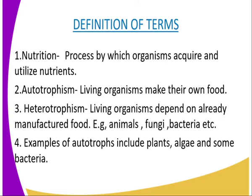Organisms that feed on these already-synthesized foods are called heterotrophs. Examples of heterotrophs are animals, fungi, and bacteria. Examples of autotrophs are plants, algae, and some bacteria. In simple terms, autotrophs are plants while heterotrophs are animals.